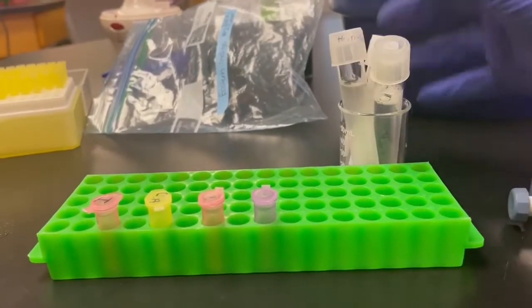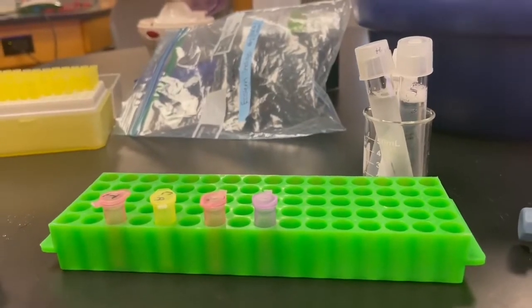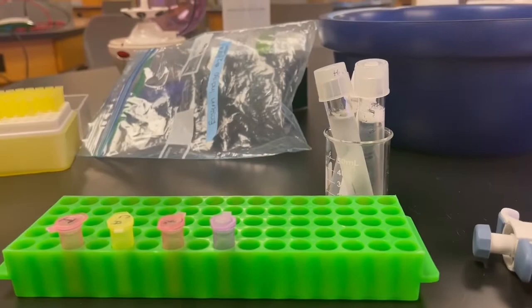A timber rattlesnake, an eastern diamondback rattlesnake, and a cotton mouth. And we will be combining 25 microliters of sample buffer with 25 microliters of each venom sample into the gel well.